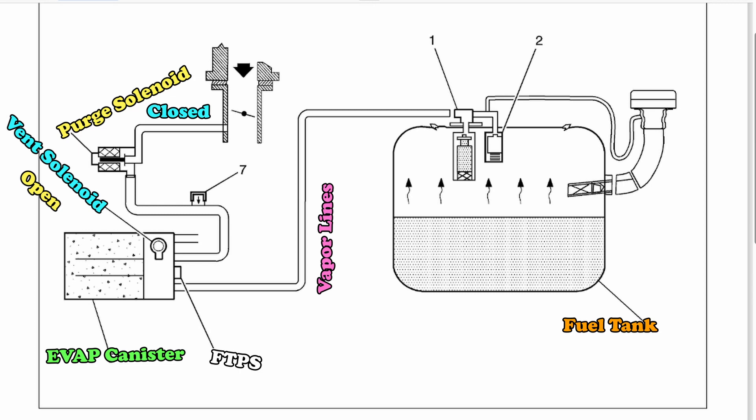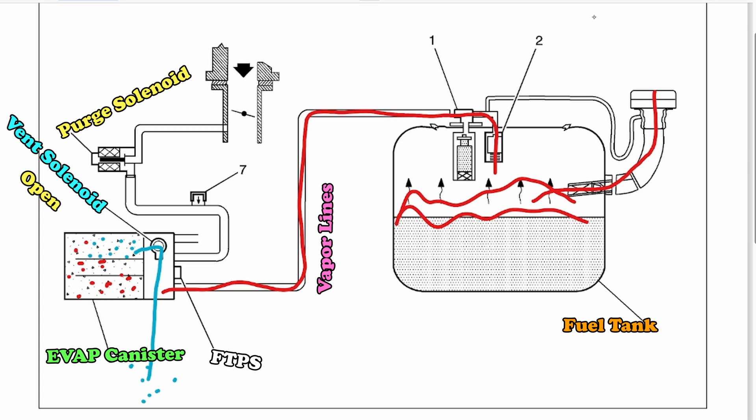When the fuel tank pressurizes, either by heat expansion or during a fueling event, the fuel vapor is pushed through the vapor lines into the charcoal canister. The hydrocarbons bind and collect to the charcoal inside the canister. This separates the hydrocarbons from the air. That air is allowed to vent out the vent solenoid into the atmosphere.